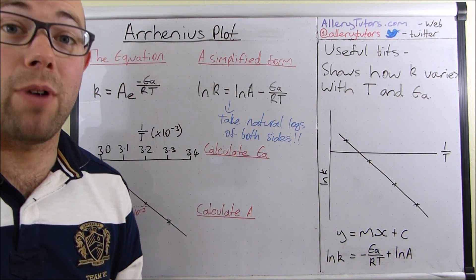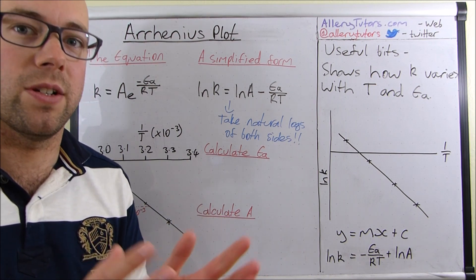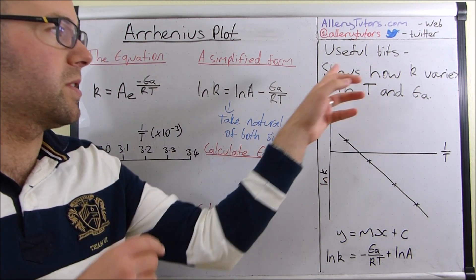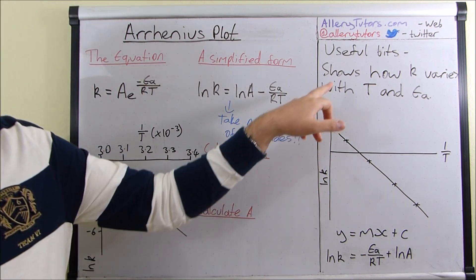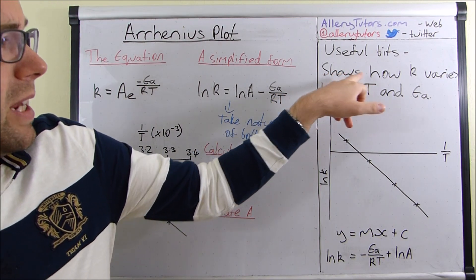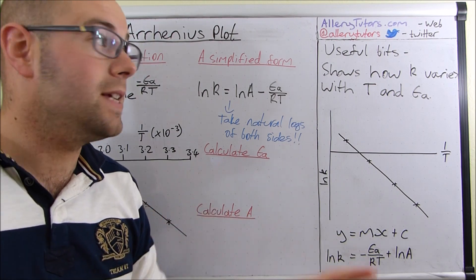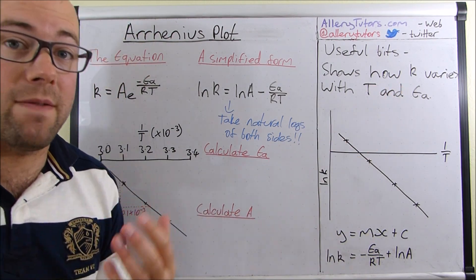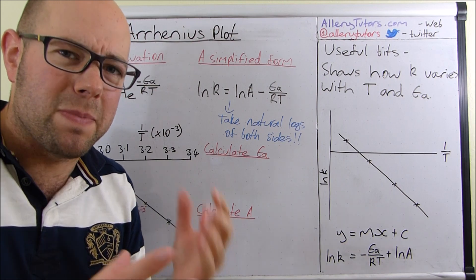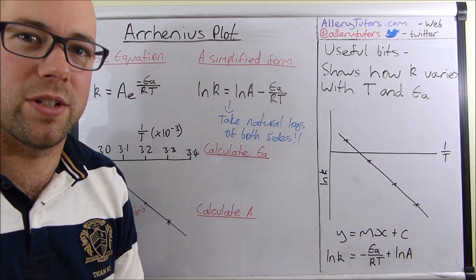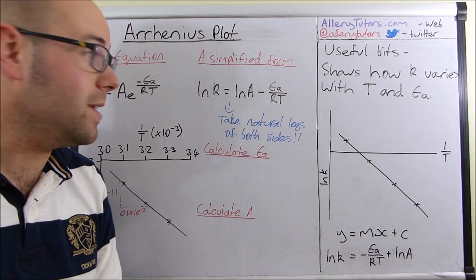So the first thing is very briefly just to look at the Arrhenius equation. Basically he came up with this idea where he would make a link between rate constant k and how it varies with temperature and activation energy. That was basically what he tried to do and he came up with this equation.